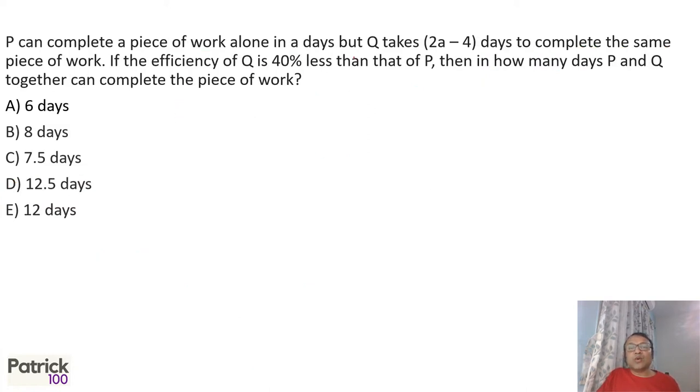P can complete a work alone in A days and Q in 2A minus 4 days. We'll get the ratio of the efficiency of P and Q. Q is 40% less than P, so P's efficiency is 10 and Q's efficiency is 6, 40% less. Days taken are inversely proportional to efficiency because more the efficiency, less the days. So days will be 6 is to 10 or 3 is to 5.